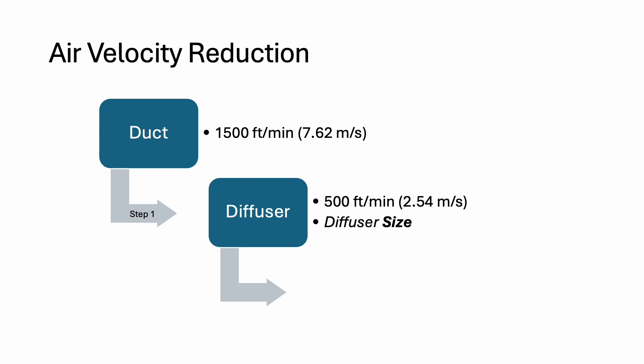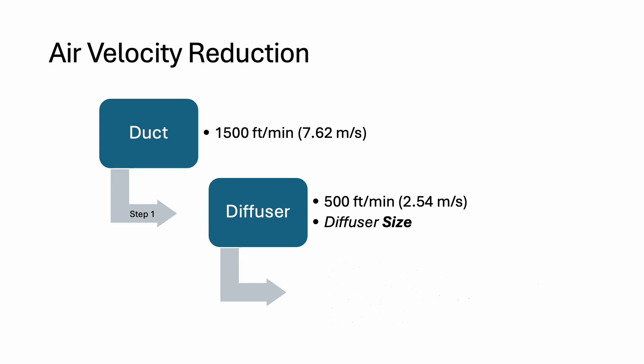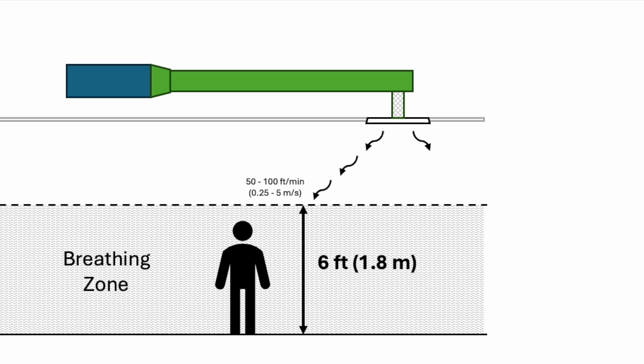As for the second step, the air velocity needs to be reduced from 500 feet per minute at the diffuser to 100 feet per minute before entering the breathing zone. The distance which the air travels from the diffuser to where it reaches 100 feet per minute is known as throw.